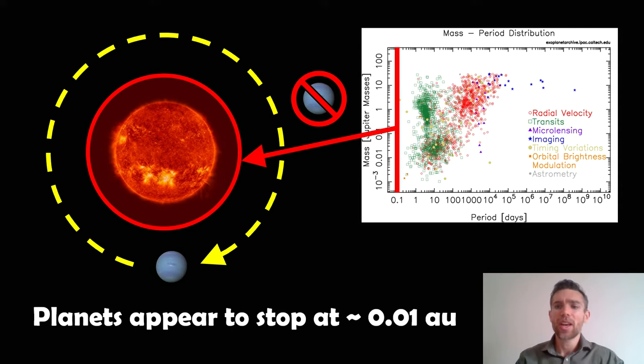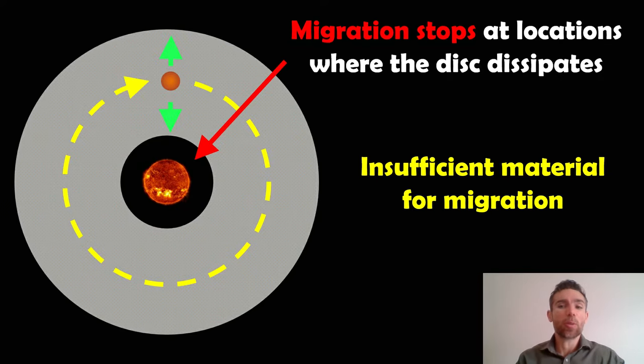If you look at that there's kind of a limit to how close they can get to their star. The orbital period, the shorter it is the closer it is to a star, and it seems to be around about 0.01 AU. We don't really find planets any closer than that. That's pretty close, that's one percent of the orbit of Earth. There seems to be a limit to how close they can get to their star and they seem to stop, so there has to be a mechanism stopping it.